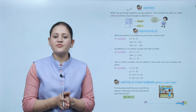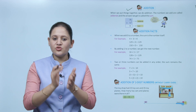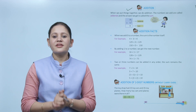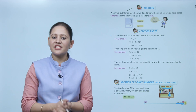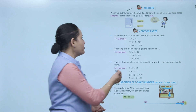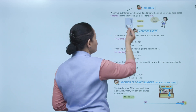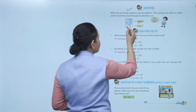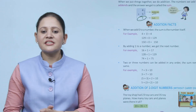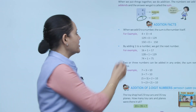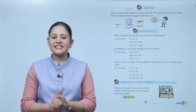When we put things together, we do addition. Addition means combining numbers. The numbers we add are called addends and the answer we get is called the sum. So here we are adding 4 and 5 — these are the addends and the result is the sum. Plus is the sign for addition.